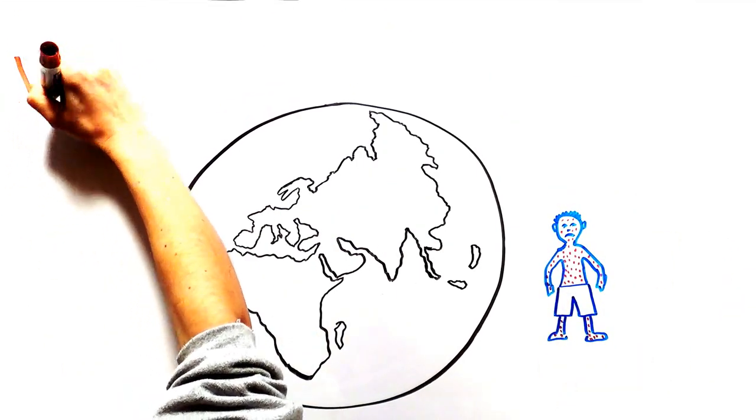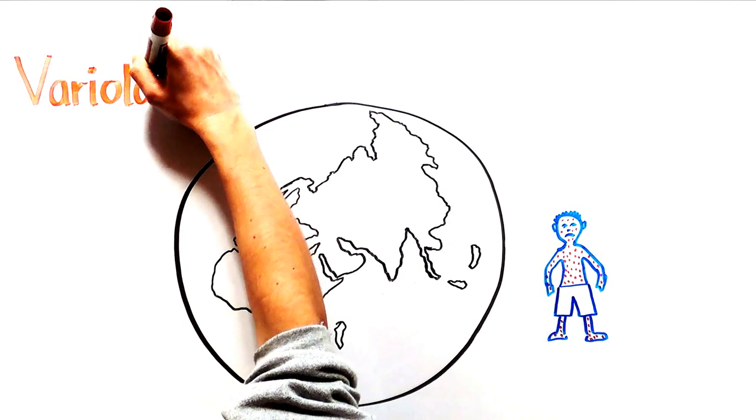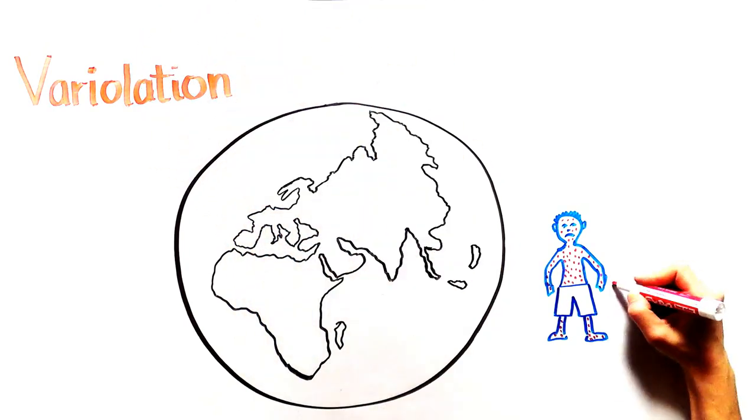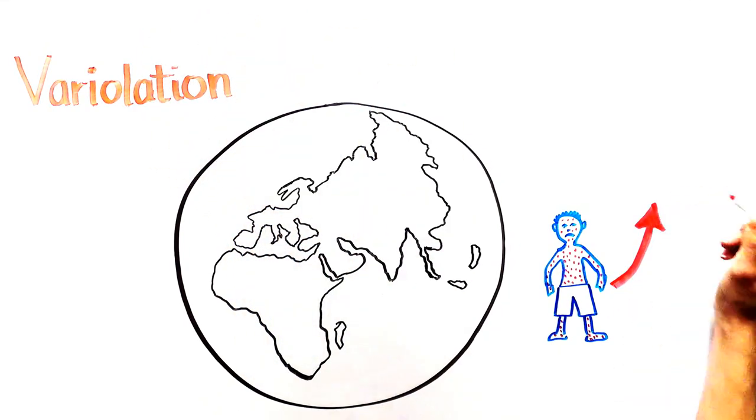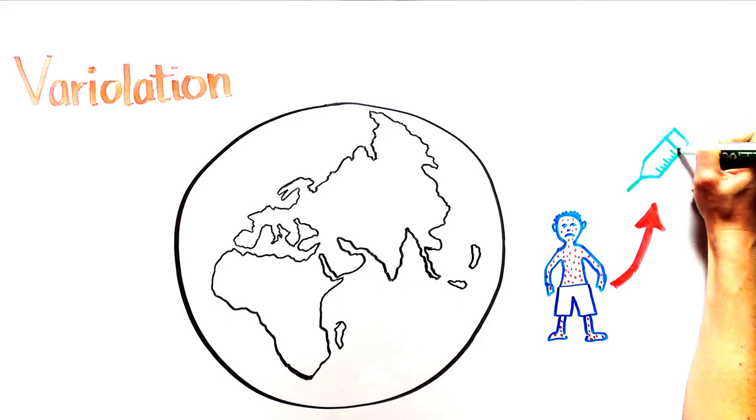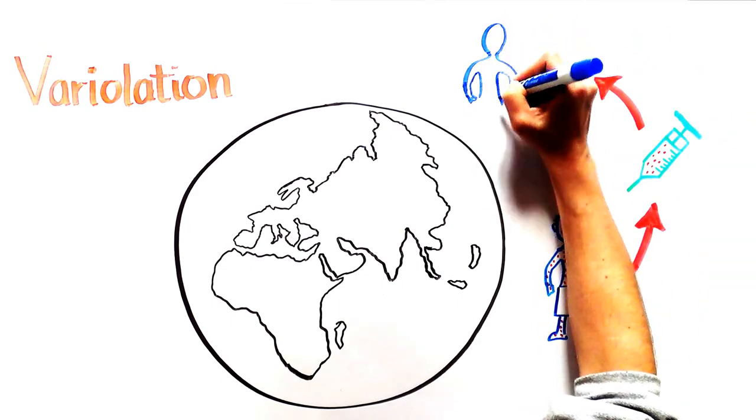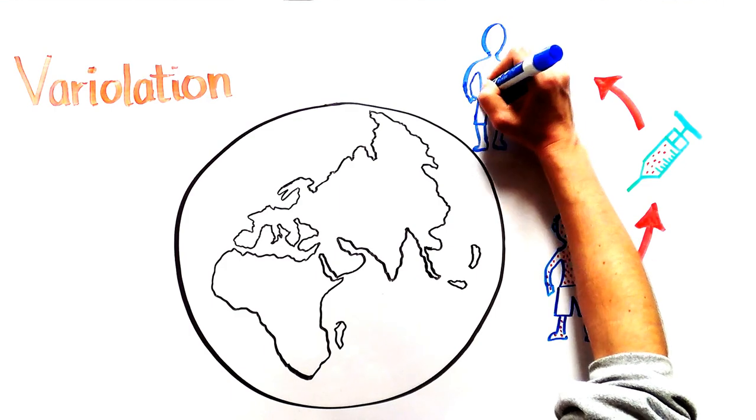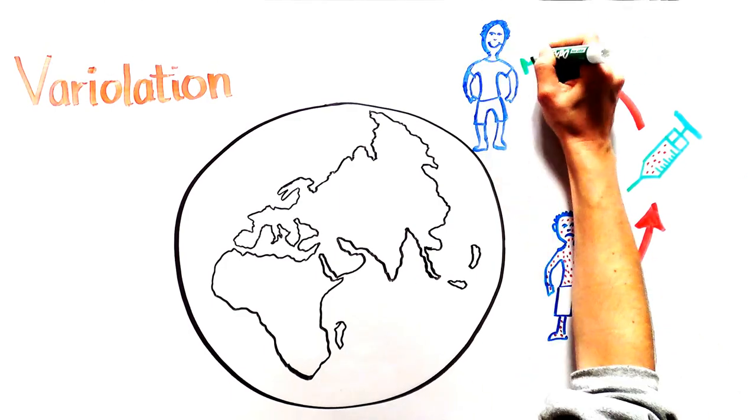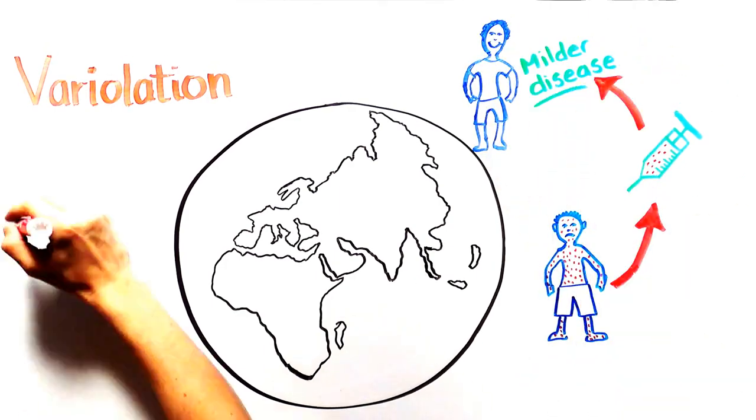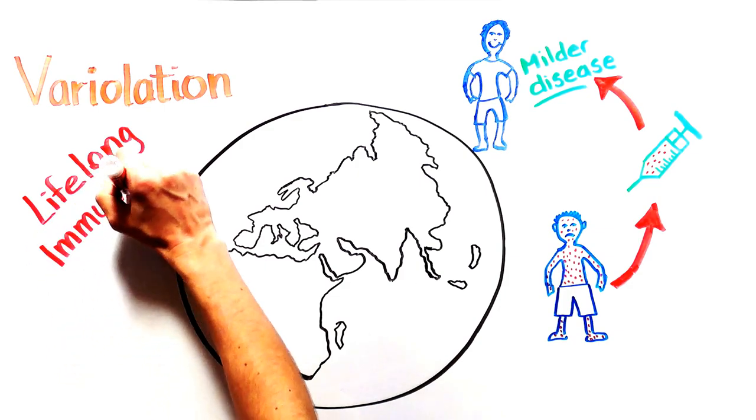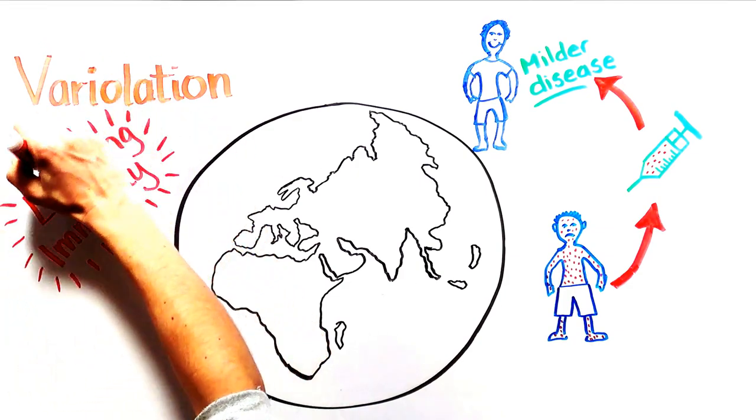Fortunately, vaccine-like treatments were developed to protect people against this sickness. In Asia, a technique known as variolation was used involving a person being purposefully infected with smallpox by placing pus from a smallpox sore under their skin. This caused a milder disease than a full smallpox infection and resulted in the person gaining lifelong immunity.